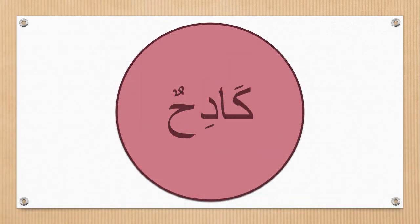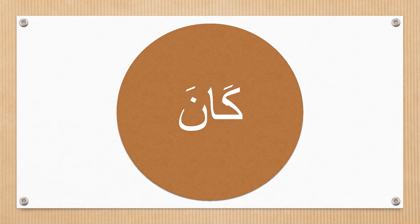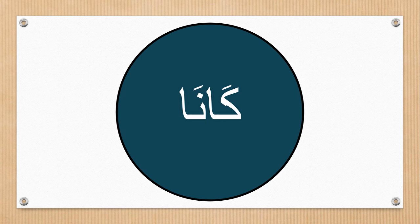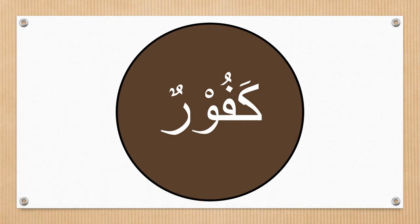In this word, we will be prolonging kaf because it's followed by alif madd. In this word, we will only be prolonging letter kaf because it's followed by ya madd. In this word, we will only be prolonging kaf because it's followed by alif madd — make sure your noon is short. In this word, we will only be prolonging kaf because it's followed by ya madd. In this word, we will be prolonging letter fa because it's followed by ya madd.